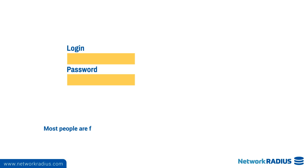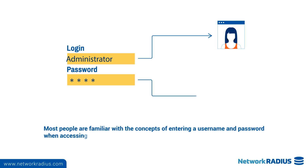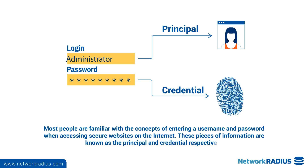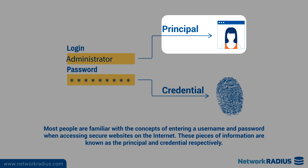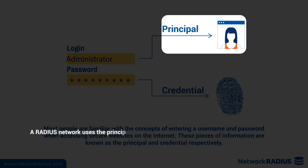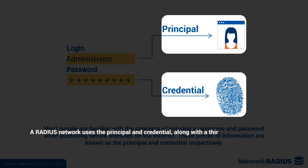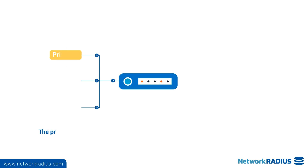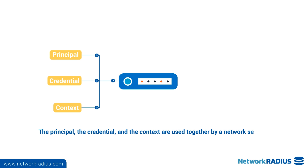Most people are familiar with the concepts of entering a username and password when accessing secure websites on the Internet. These pieces of information are known as the principal and credential, respectively. A Radius network uses the principal and credential along with a third piece of information called the context, which gives a frame of reference for each login. The principal, the credential, and the context are used together by a network security system to identify the user.